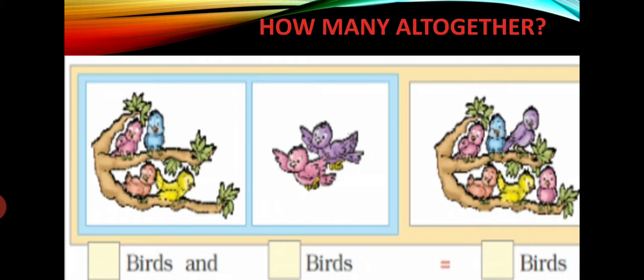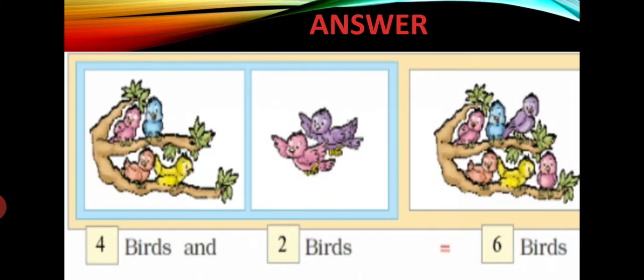So addition is to put things together. Addition means combining or joining. So 4 birds were sitting on the tree, 2 birds come to them, so now there are 6 birds sitting on the tree. You can write down in this way: 4 birds and 2 birds that is equal to 6 birds.